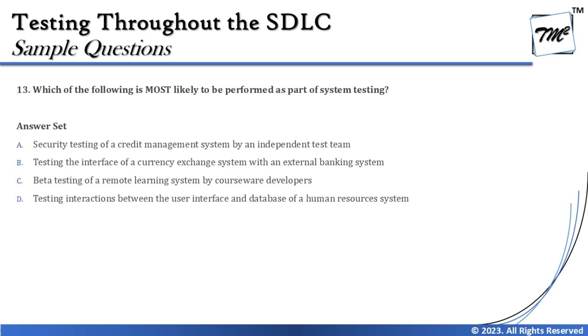Option B says: testing the interface of a currency exchange system with an external banking system. This is more like system integration testing, not system testing. System testing talks about a particular system as a whole, not integrations between systems. There is a dedicated level for that called system integration testing, so Option B is not correct.